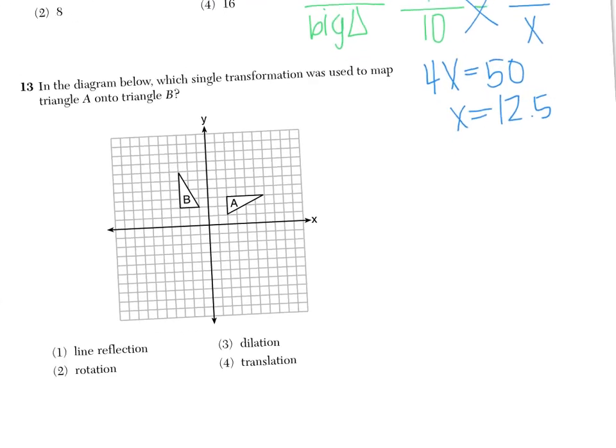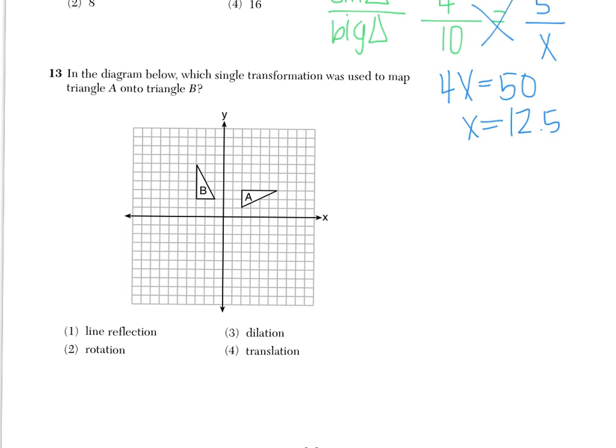Number 13 says, in the diagram below which single transformation was used to map triangle A onto triangle B. So if you look here, it looks like the very right vertex of this triangle gets moved and becomes the tippy top vertex of triangle B. And so it looks like we're swinging, or in other words, turning.